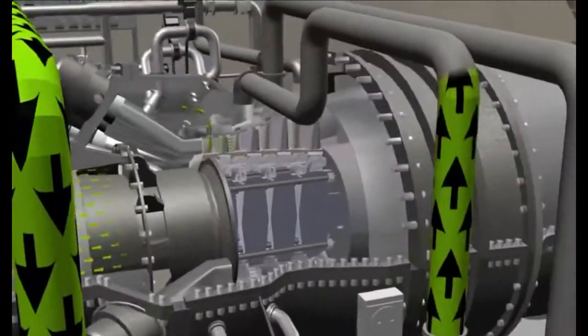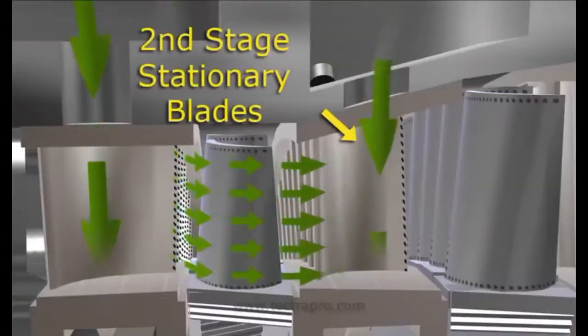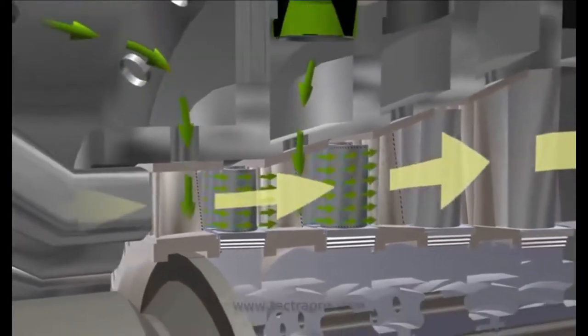The first and second stage blades contain cooling holes on the trailing edges to maximize the cooling effect on the extremely hot gases coming from the combustors.